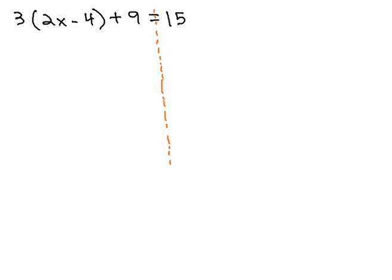As we do that, we may have to clean up on the left side a bit. We have a 3 in front of the parentheses. We've seen this before. We want to distribute through the parentheses. That will give us 6x minus 12, and then we still have a plus 9 at the end, equals 15.